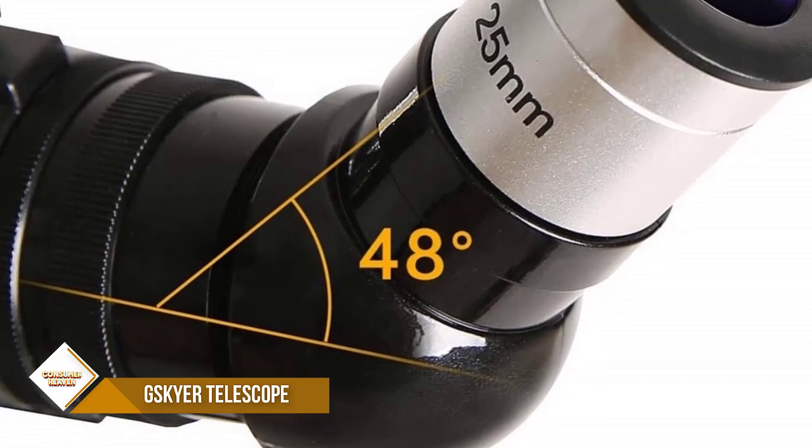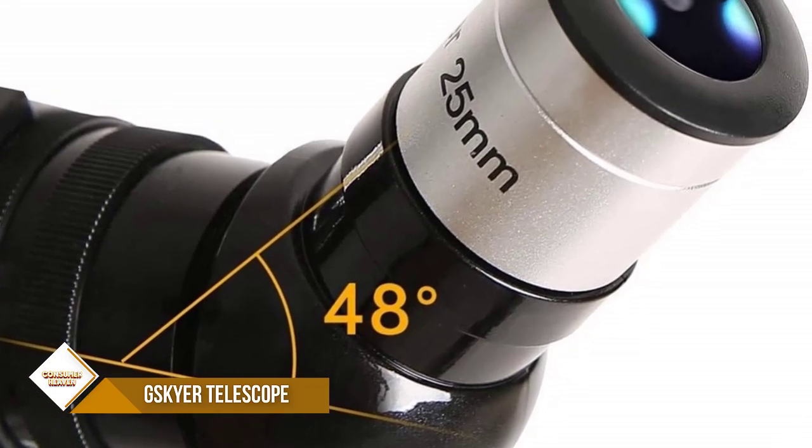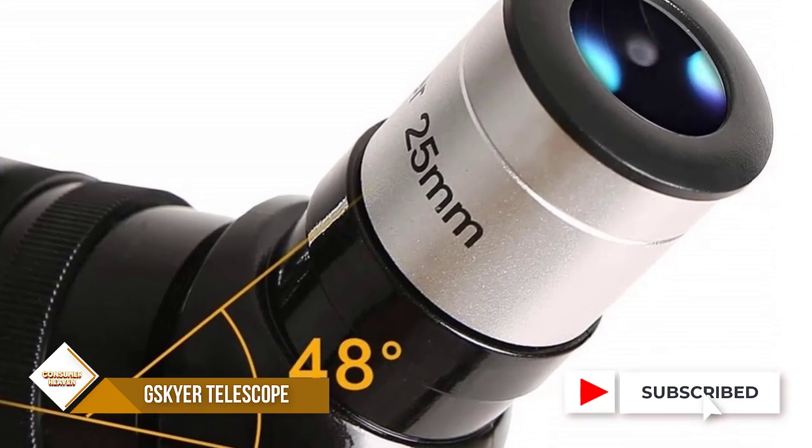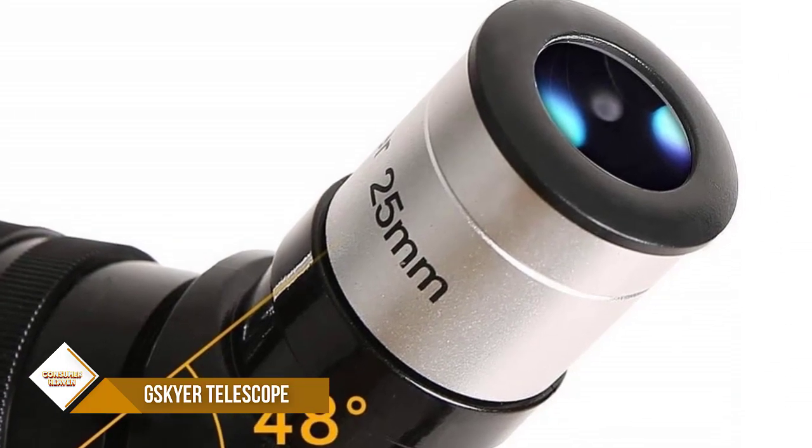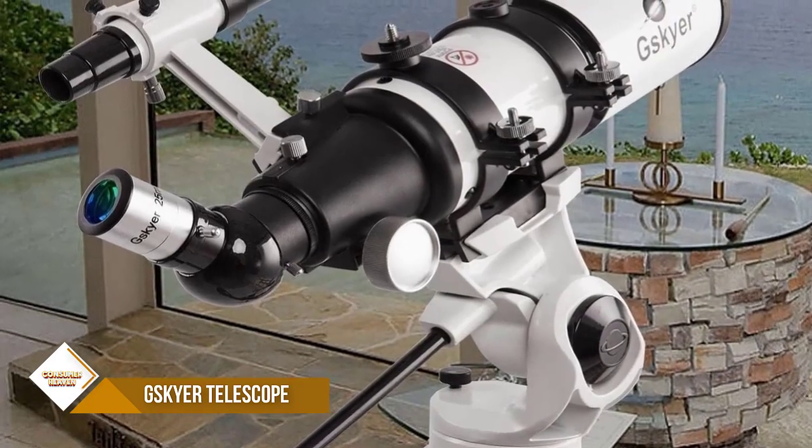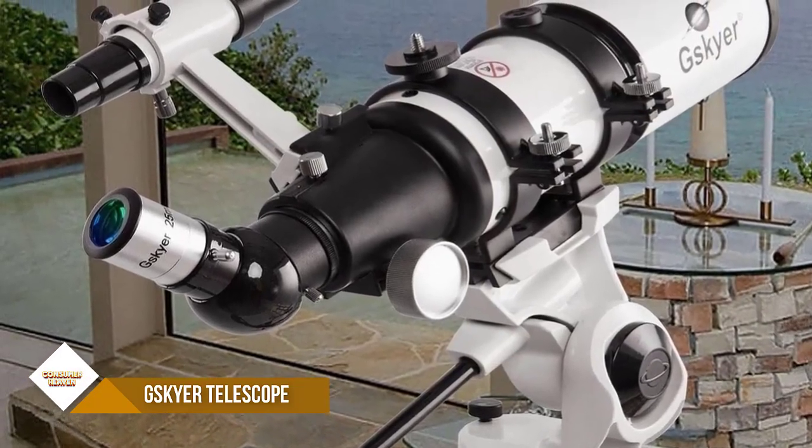It comes with three replaceable eyepieces, 16x, 40x, 80x, and a 3x Barlow lens, plus a 6x30 finderscope with mounting bracket and erect image diagonal to help you locate objects more easily.